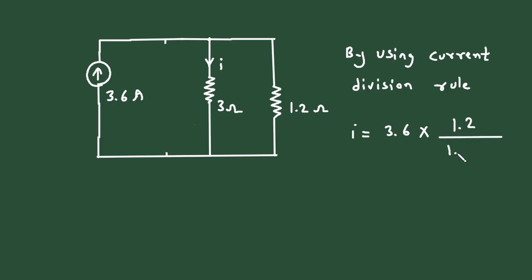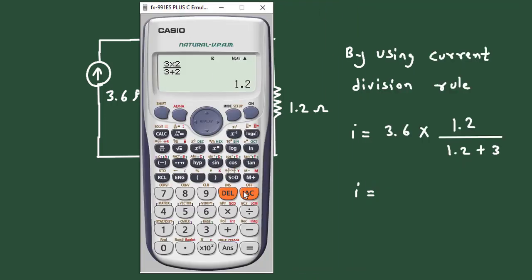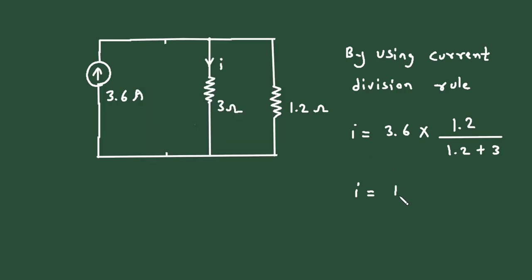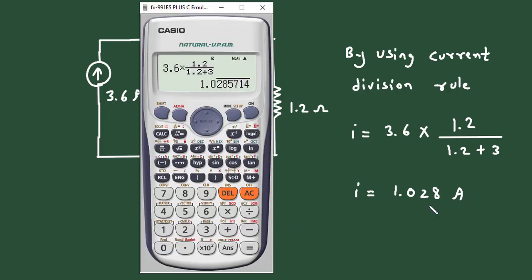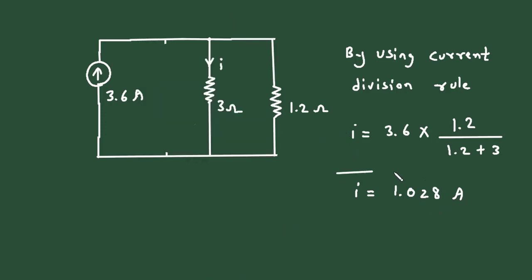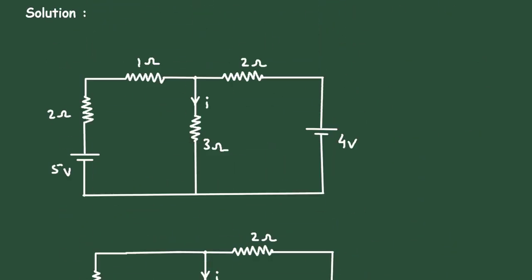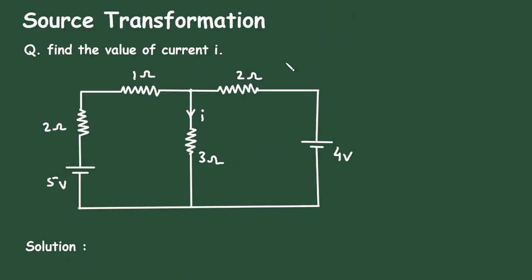Solving this: I is equal to 3.6 multiplied by 1.2 divided by 1.2 plus 3, which gives I equal to 1.028 Ampere. This is how we can find the value of current I by using the source transformation technique. Check the link in the comment section and install the app for free. Thanks for watching.